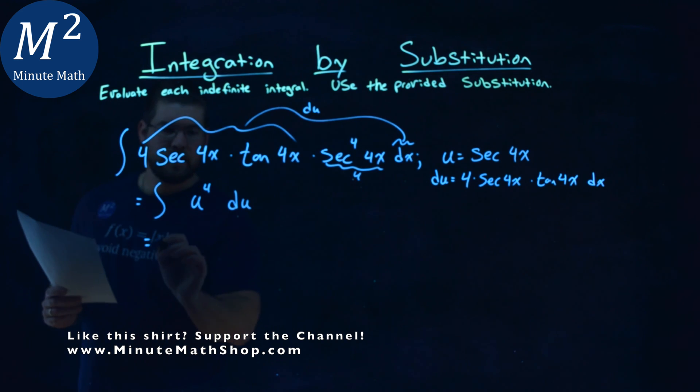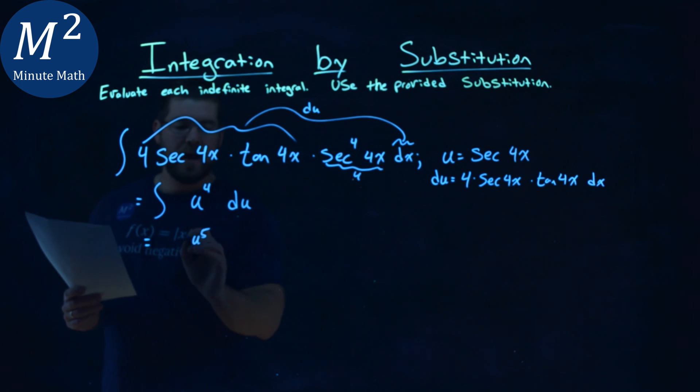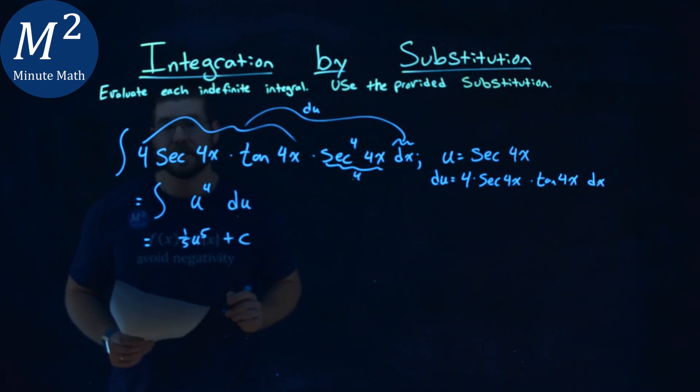From there, let's use the power rule of integration. We add the exponent by 1, so we have u to the 5th power, then we put 1/5 out front. Don't forget plus c.